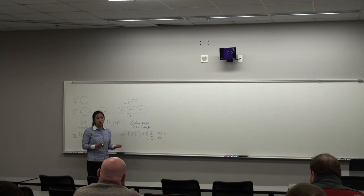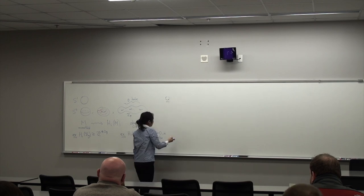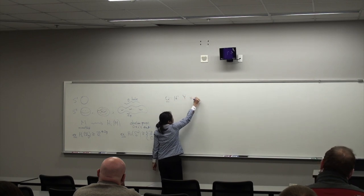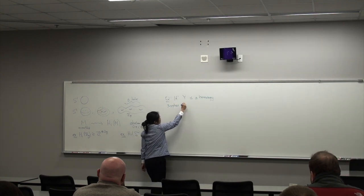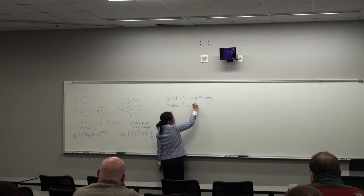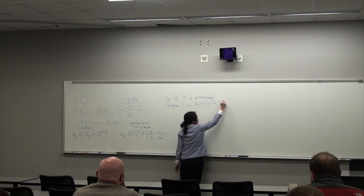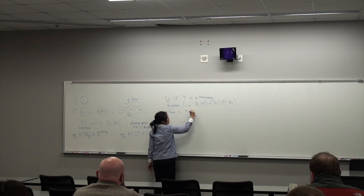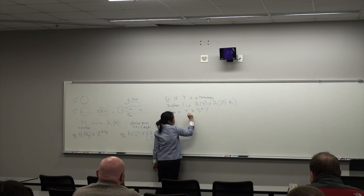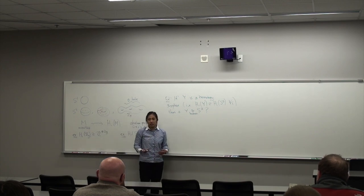For two-dimensional surfaces, homology was a strong enough invariant to tell us exactly which genus surface we were looking at. So it's a natural question to ask how strong of an invariant homology is in higher dimensions. In dimension three, if Y is a homology three-sphere — in other words, Y is a three-manifold with the same homology groups as S³ — then is Y homeomorphic to S³?